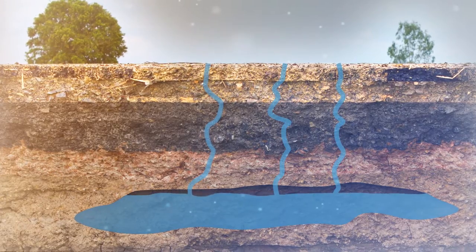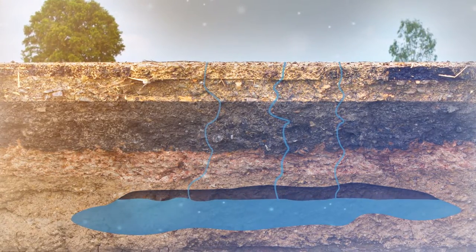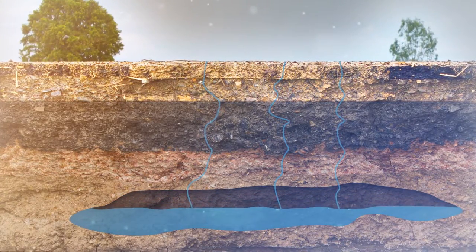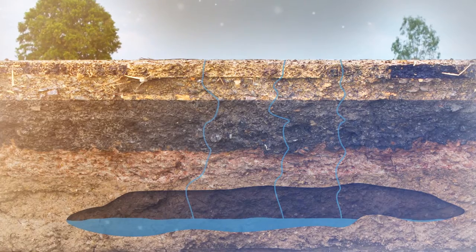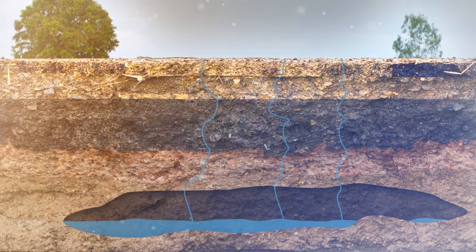Increased evaporation rates also accelerate the drying of the land surface, increasing the incidence and severity of drought. Surface drying decreases the amount of water moving downward through the layers of the soil, resulting in decreased groundwater recharge. The length of both short-term and long-term droughts is projected to increase, especially in the southern United States. As a result, communities may be susceptible to reduced water supplies.